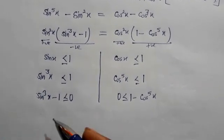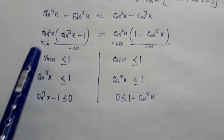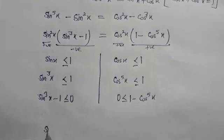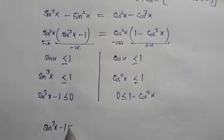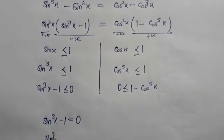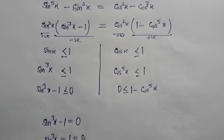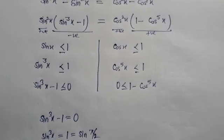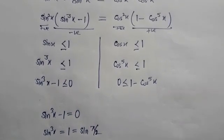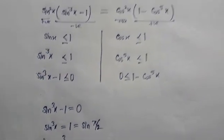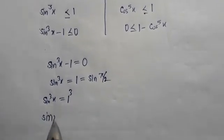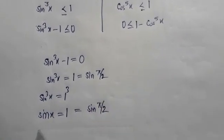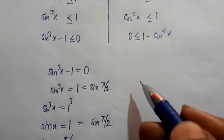We have only two cases. First, sin²x(sin³x - 1) = 0, so sin³x - 1 = 0, which gives sin³x = 1. Taking the cube root, sin x = 1, which means x = π/2.